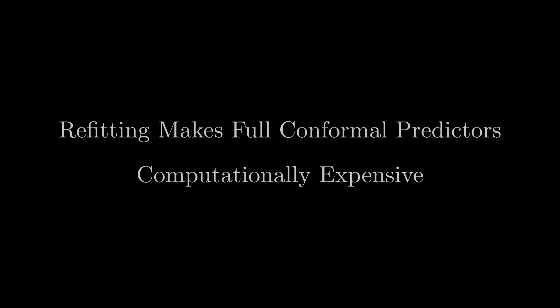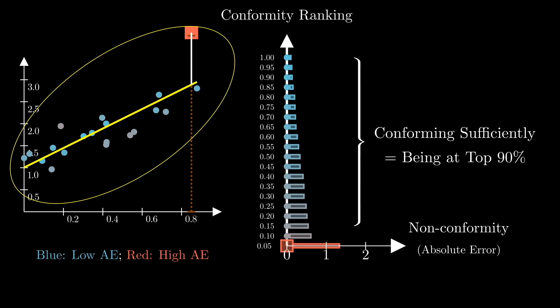Is there a way for us to avoid refitting the model? The reason we need refitting is because our bag includes the square, so every time we try a new plausible value by moving the square, the bag changes. And since the model is fit on points inside the bag, we need to refit the model. How can we get away from this situation?